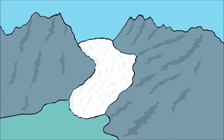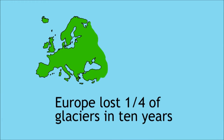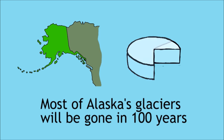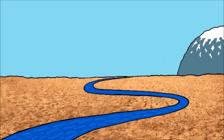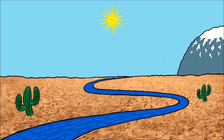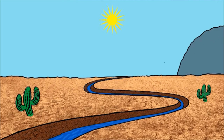Melting ice. Glaciers in mountains around the world are melting back. Europe's glaciers are thought to have lost around a quarter of their mass in the first decade of the 21st century. Almost all of Alaska's 2,000 glaciers are set to disappear by the end of the 21st century. Glaciers are important sources of water in the summer or dry season, especially in hot climates. They melt gradually, keeping the rivers flowing. Winter snow replenishes the ice ready for the next season, but currently more ice is melting than is replaced by snow.